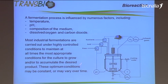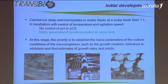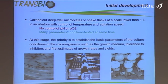In an industrial setup, all these parameters are strictly monitored and controlled, and depending on the goal of the process, we may need to maintain all these parameters constant, or we may need to vary them over time. But first, we need to find out what are the best parameters, and we start these studies at small scale, performed in either deep well plates with a capacity of one to two milliliters of culture, and also in shake flasks with capacity up to one liter.